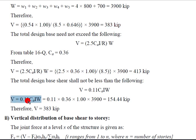So it means our V is less than the upper limit. The lower limit is V = 0.11 × CA × I × W. CA is equal to 0.36. Now simply put the value in this equation.